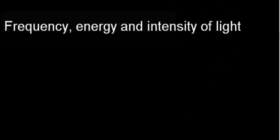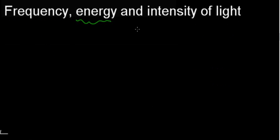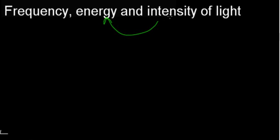Before we talk about Einstein, who is going to say that light is not really a wave, we need to understand what properties light has before we try to interpret it as a wave or as a particle. Light has frequency because light is a wave. It's also associated with energy - we know that UV light from the sun can cause damage to our skin, and x-rays are way more powerful, while radio waves are less powerful. There's also intensity, and students often mix the two - they say more energetic means more intense, but those two are actually not related.